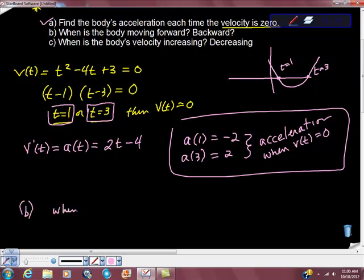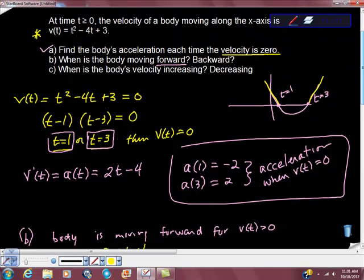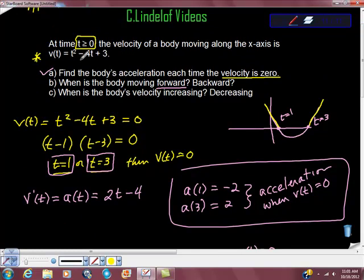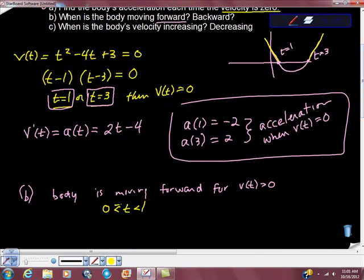When t is, which way do I want to go first, it says forward, so body is moving forward for v(t) > 0. So where is v(t) > 0? We can take a look at this really quickly. v(t) is greater than 0 here. We're looking at the heights. It's greater than 0 here, and it's greater than 0 over here. So where are those places? So one is t is less than 1, but greater than 0, because remember, our condition says that time is greater than or equal to 0. So matter of fact, I should put greater than or equal to here. So time is greater than or equal to 0, but less than 1, we have forward movement.